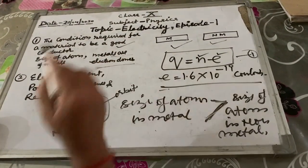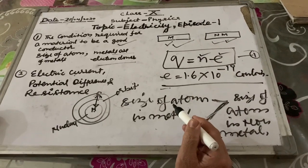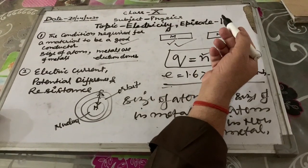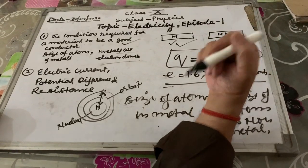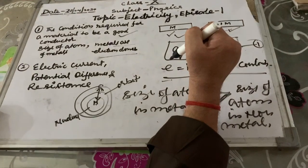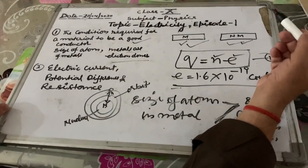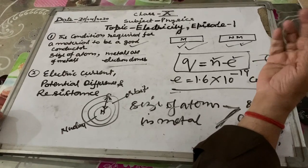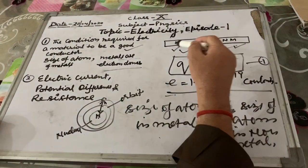The second difference is that metals are electron donors and non-metals are electron acceptors. Metals have one, two, or three electrons in their outermost orbits, so it is very easy to lose or donate those electrons to complete the octet. Whereas in non-metals, the electrons in the outermost orbits are five, six, or seven, and these electrons are very difficult to lose. Therefore, metals have free electrons and behave like good conductors.